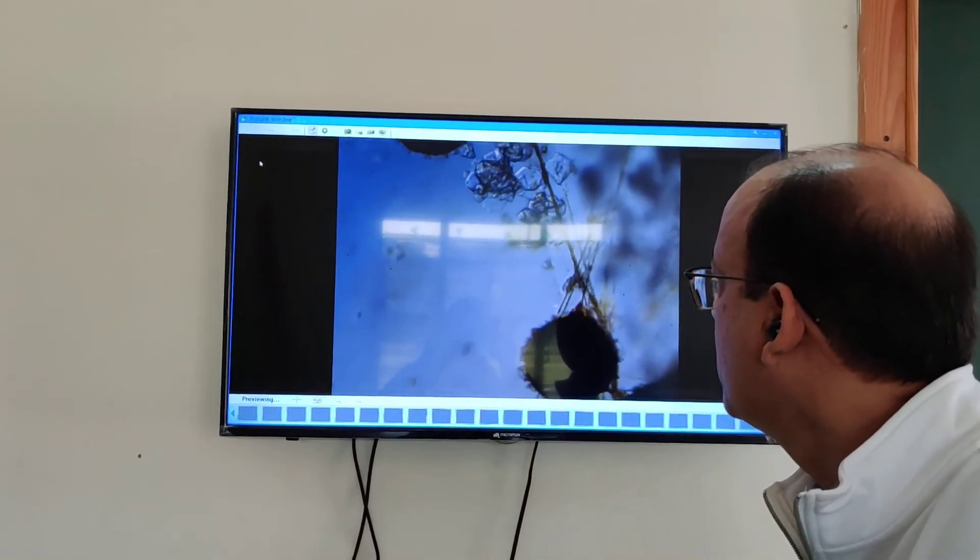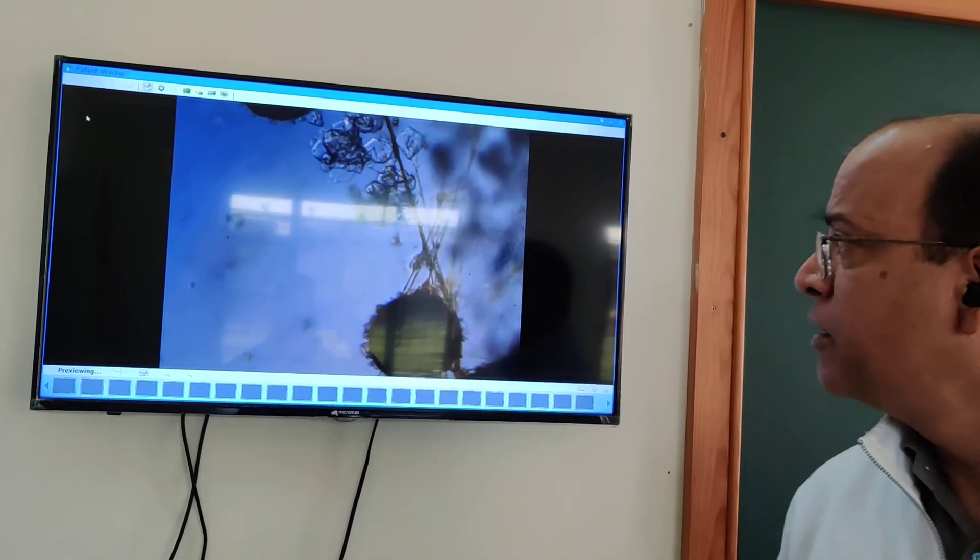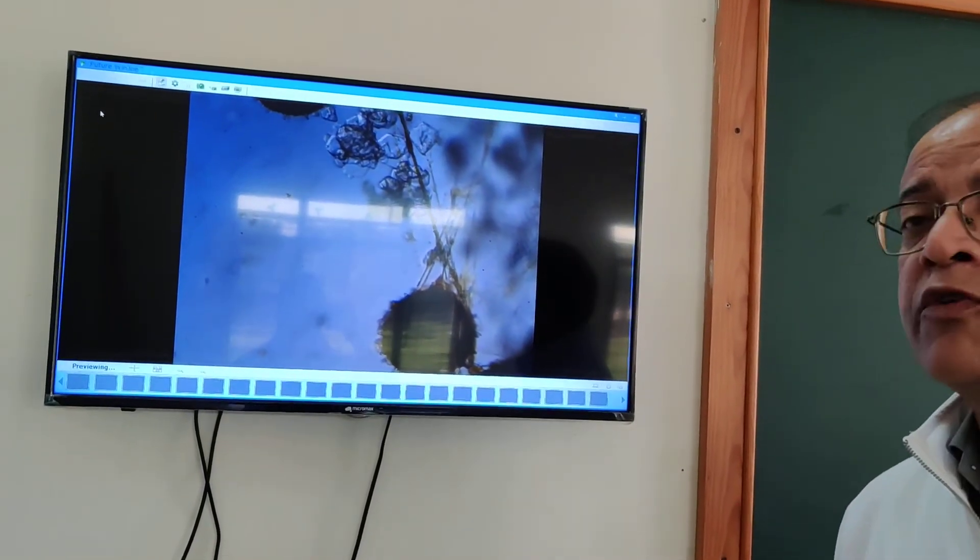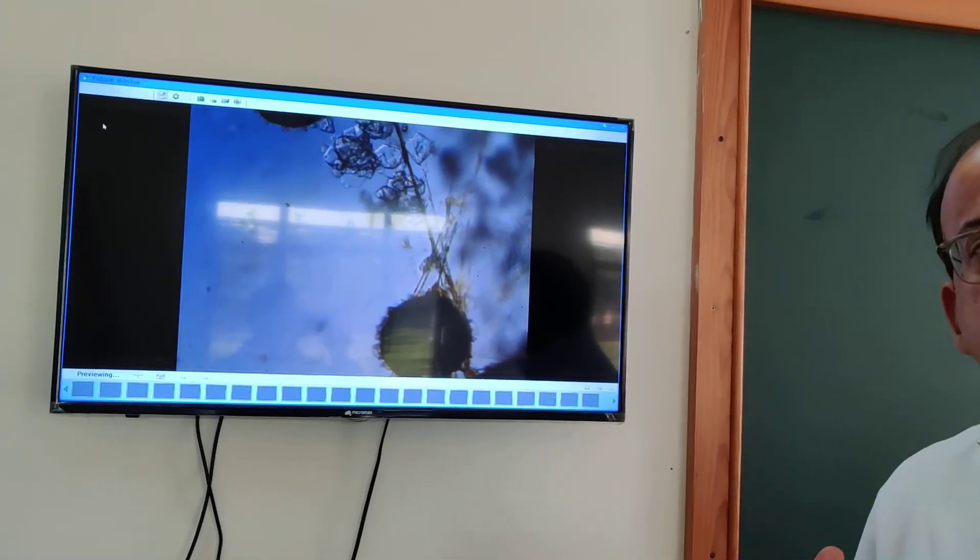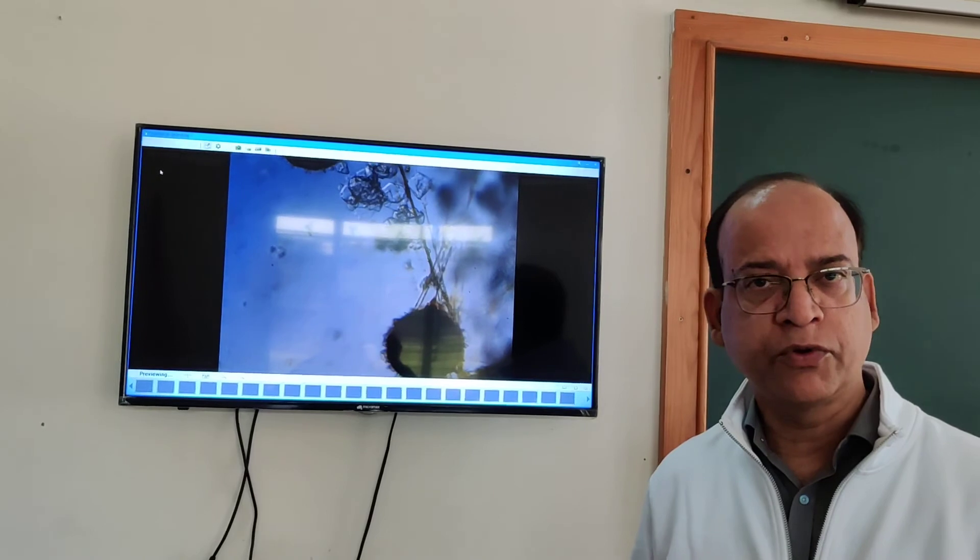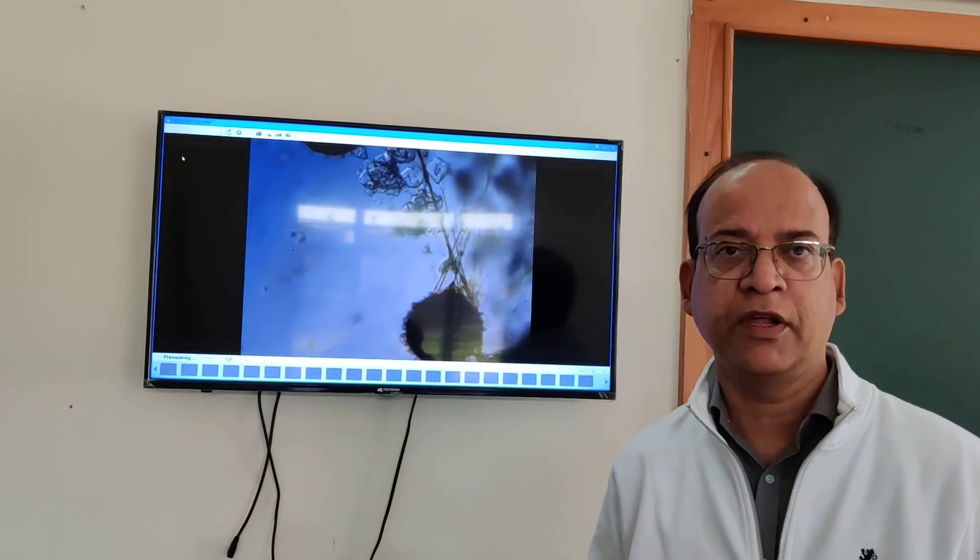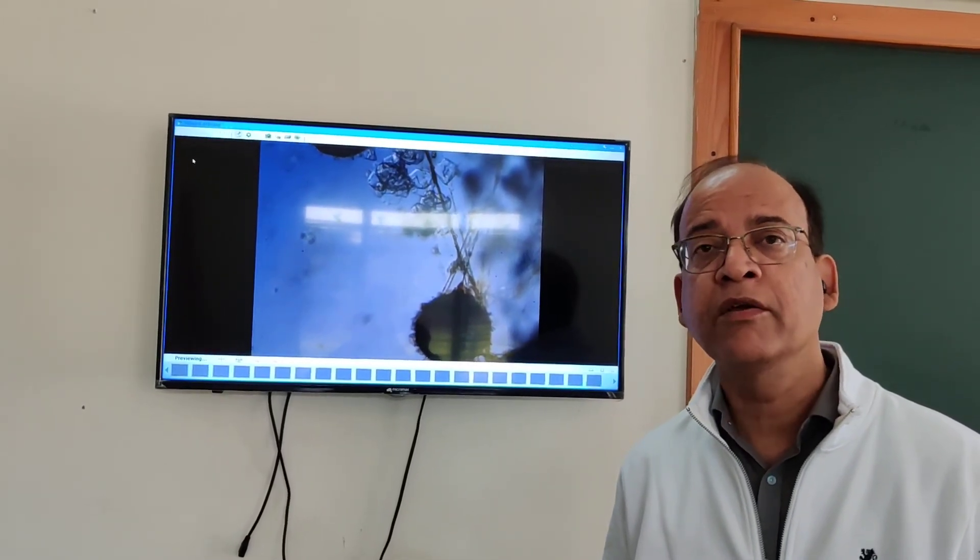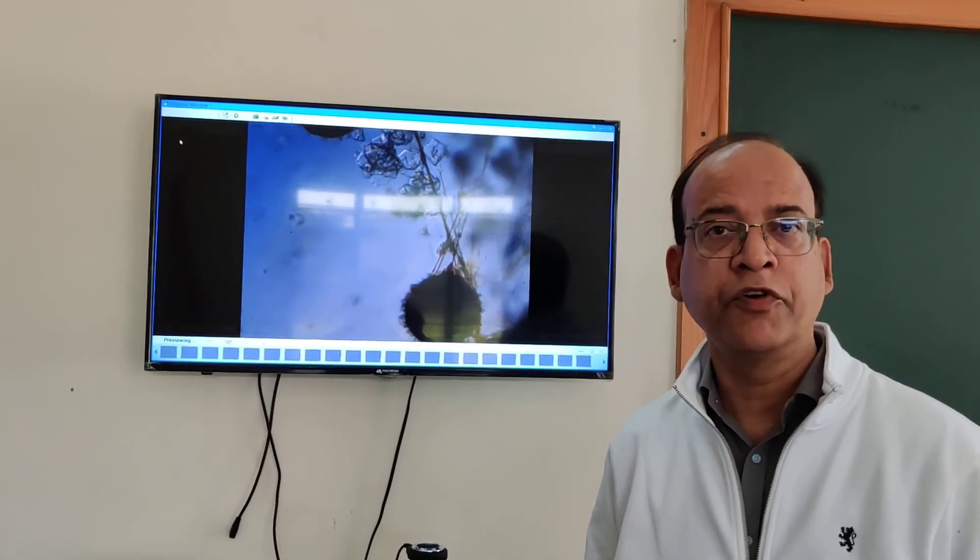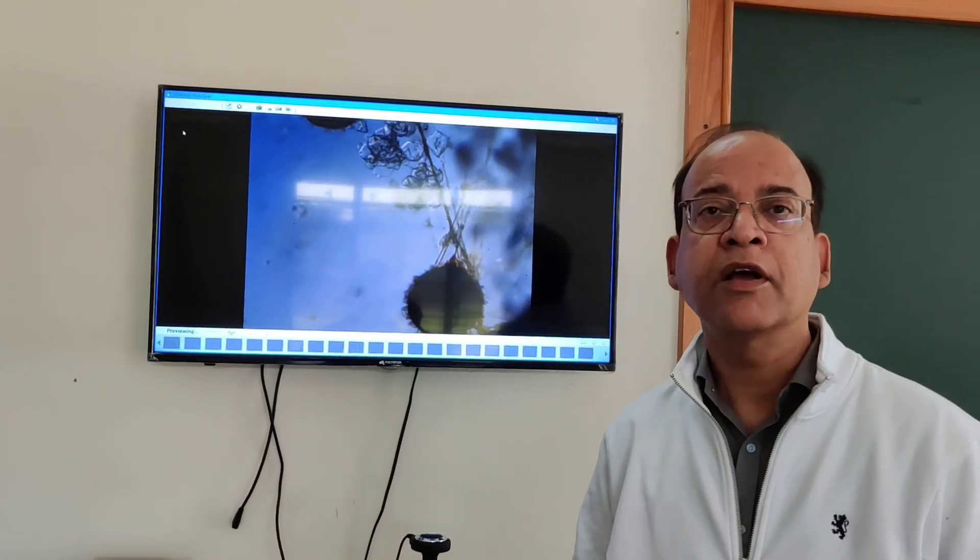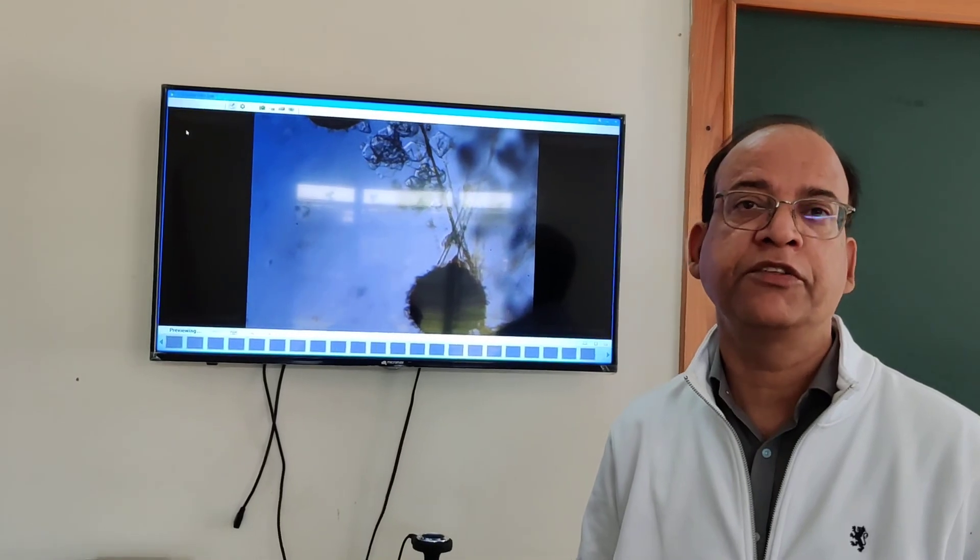We will repeat the process again after 5 minutes and count the number of pollen grains which are showing germination. We are continuously counting the number of pollen grains up to 30 minutes. Then we will repeat the process with other flowers also, and in the same way we will study the rate of germination of pollen grain. After that we can compare the rate of germination of pollen grain in different species of plants.